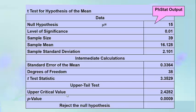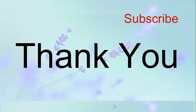H₀: mu = 15, alpha = 0.01, sample size = 39, sample mean = 16.128. Based on the test statistic of 3.3529 being greater than the critical value and the p-value of 0.0009 being lower than the 0.01 level of significance, we reject the null hypothesis and conclude there is sufficient evidence supporting the claim that the mean saturated fat content is greater than 15%. Thank you and God bless.